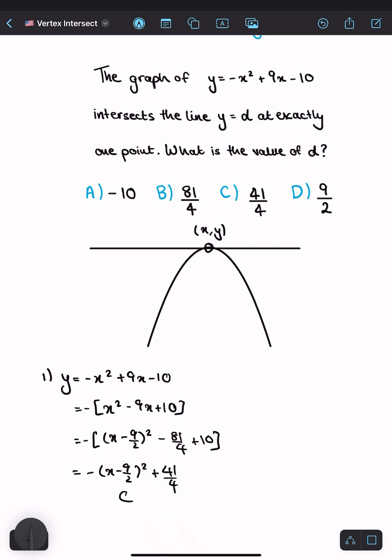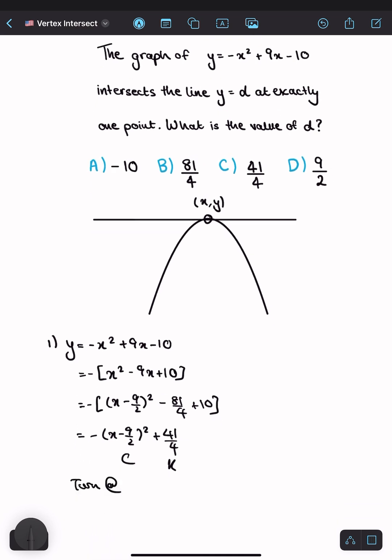We change the sign of the x-value to get the turning point at (9/2, 41/4). Therefore, d = 41/4, and our answer is C.